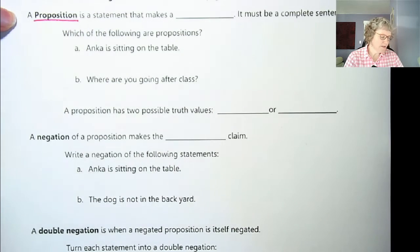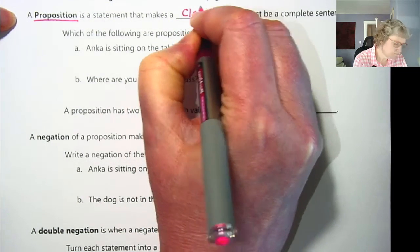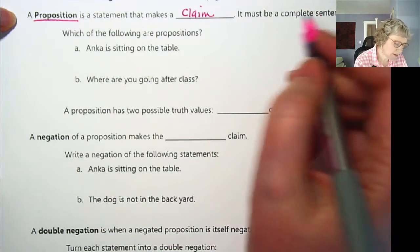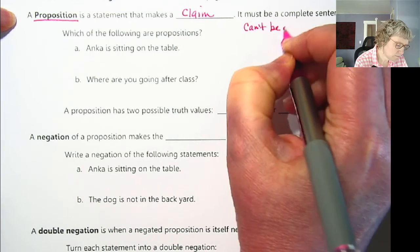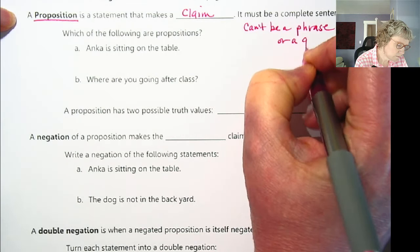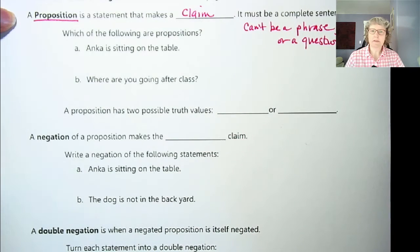A proposition is a statement that makes a claim. And the statement that makes a claim must be a complete sentence. So it can't be a phrase and it can't be a question, anything like that. So it has to be a complete sentence.